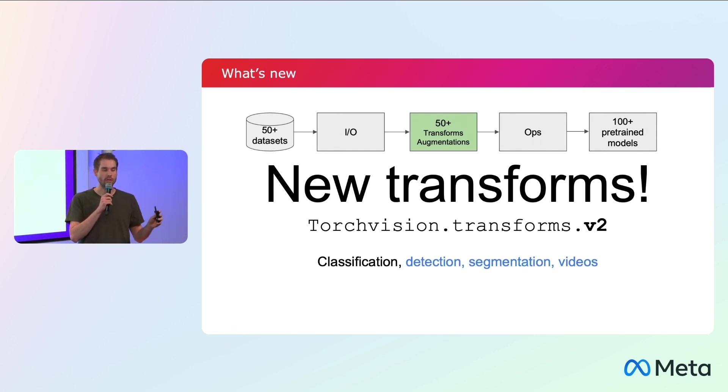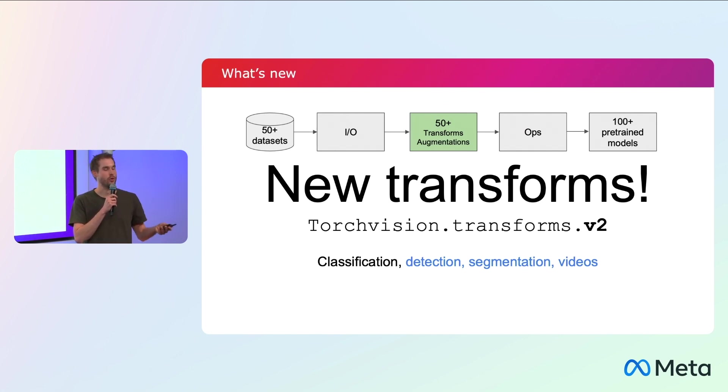Just to set the context: transforms are whatever happens after you've decoded your images and just before you pass them into the model. Typically during training, you would want to resize images, maybe flip them, change the colors, or erase some parts randomly. For inference, you'd still need at least some resizing and normalization. The main thing about these transforms now is that they don't just support classification tasks, but also detection, segmentation, and video tasks.